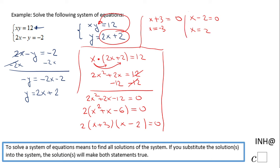However, we did not finish this problem because we also need to find y. The easiest way in this problem to find y is to use this form, y equals 2x plus 2. First, I'm going to plug in x equals negative 3. So y will be 2 times negative 3 plus 2, which will be negative 6 plus 2, and that will be negative 4. So the first solution for this system of equations is x equals negative 3 and y equals negative 4.